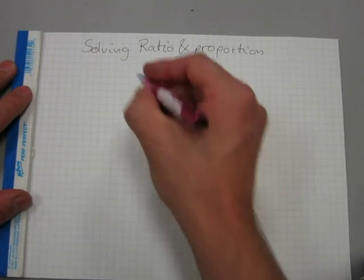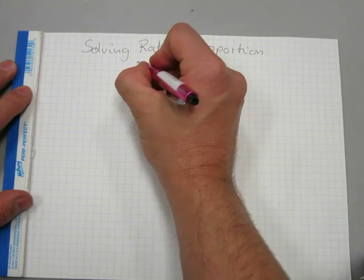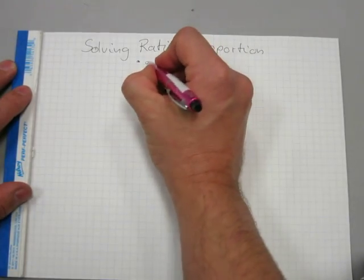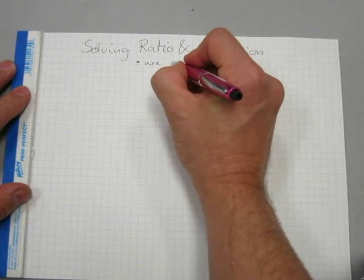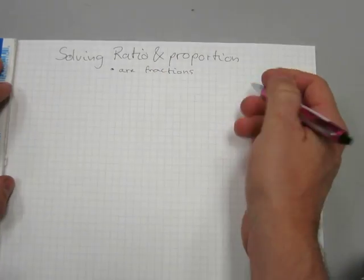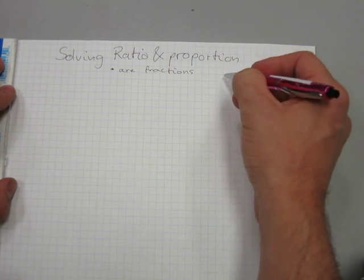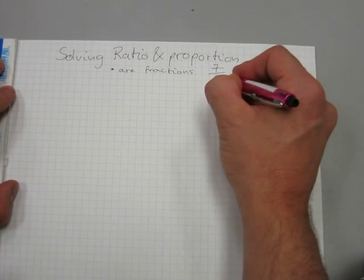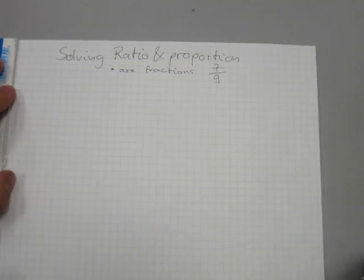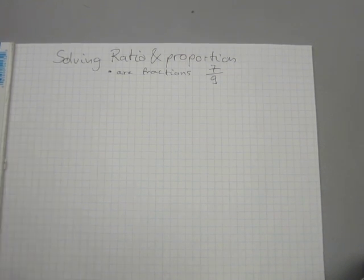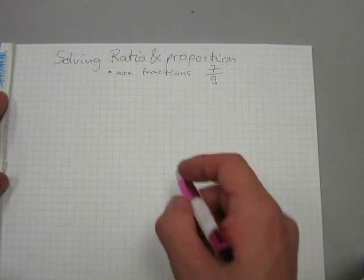A reminder that before we start, ratio and proportion are fractions and we will be using a format that looks like that — 7 over 9, or 7 proportionate to 9. Either way, it is division at its heart.